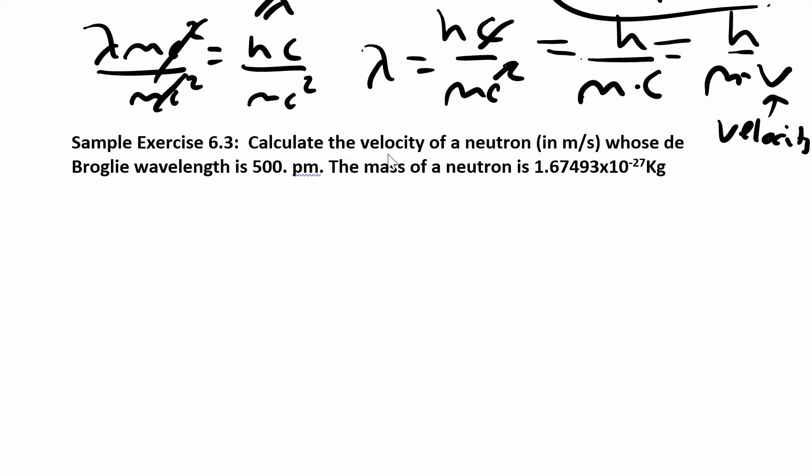Let's try this one. This problem is asking us to calculate the velocity of a neutron. They give us the mass of the neutron in kilograms and a wavelength of 500 picometers. We're going to use this equation.